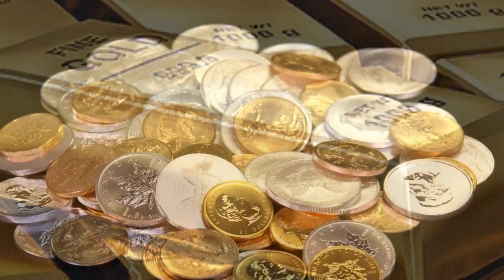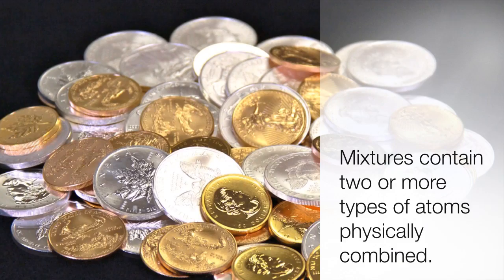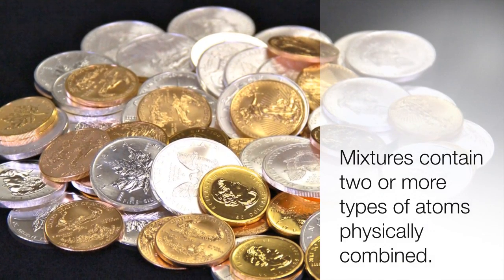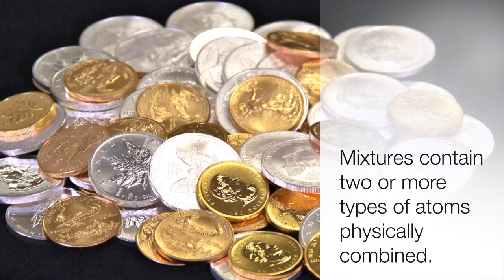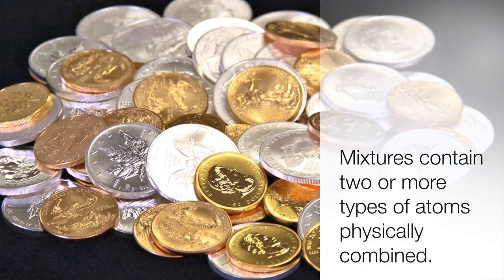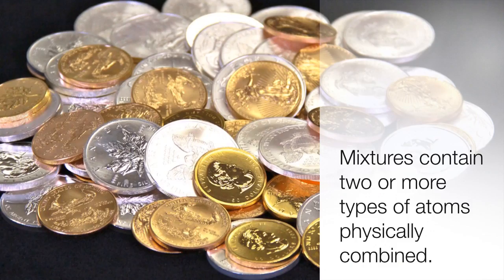If we mix even one atom of silver into it, it is no longer an element, but a mixture. A mixture, if you remember, is two or more substances physically combined. So if you put gold atoms and silver atoms together and stir them up, I have a mixture.